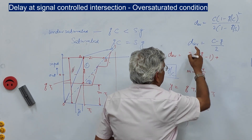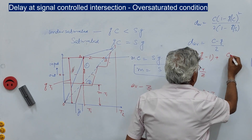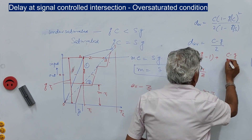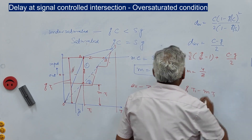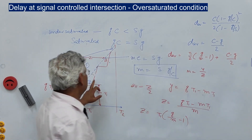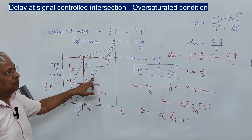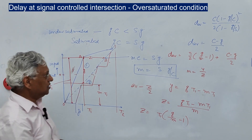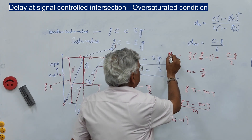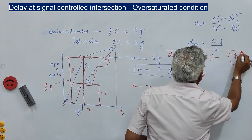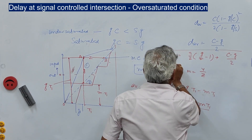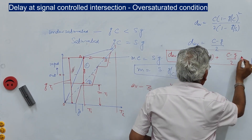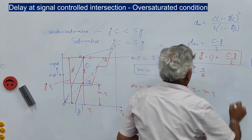The total average delay under over-saturation is: D_avg = (T1/2)(Q/M − 1) + (C − G)/2, where the first term is the delay due to Area 1 (over-saturation) and the second term, half the red time, is the delay due to Area 2 (saturated cycle).